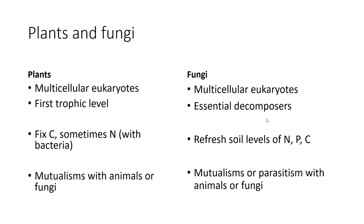Plants can fix carbon, and sometimes they can fix nitrogen with the help of rhizobial bacteria. Fungi reflect soil levels of nitrogen, phosphorus, and carbon — they put nutrients back into the soil and make them into more available forms. Plants have mutualisms with both animals and fungi, while fungi can have mutualisms with or be parasites of animals or plants.